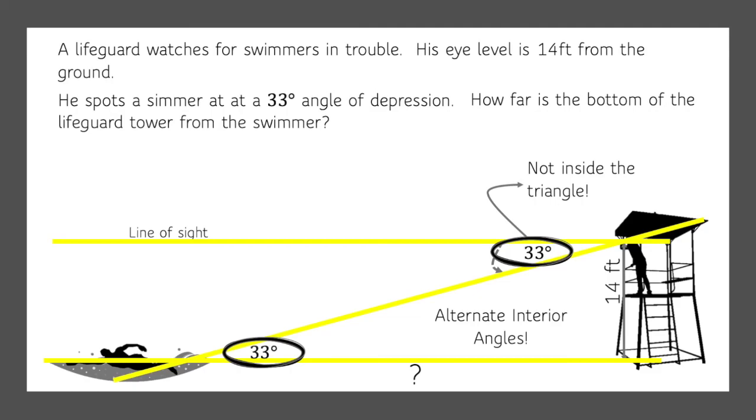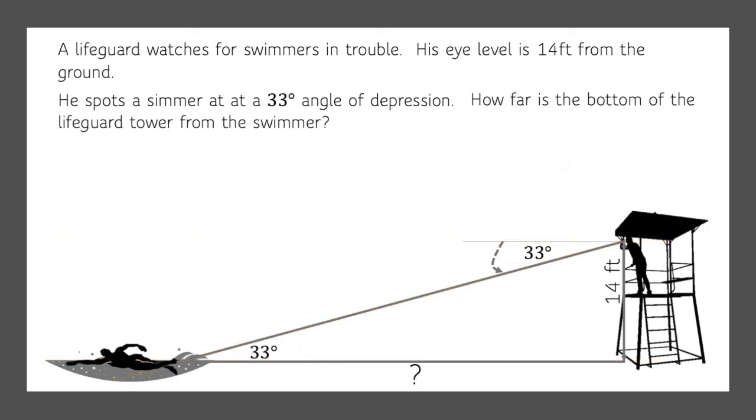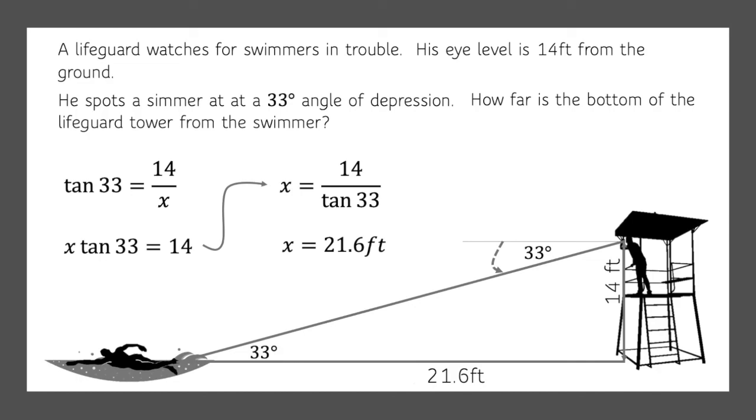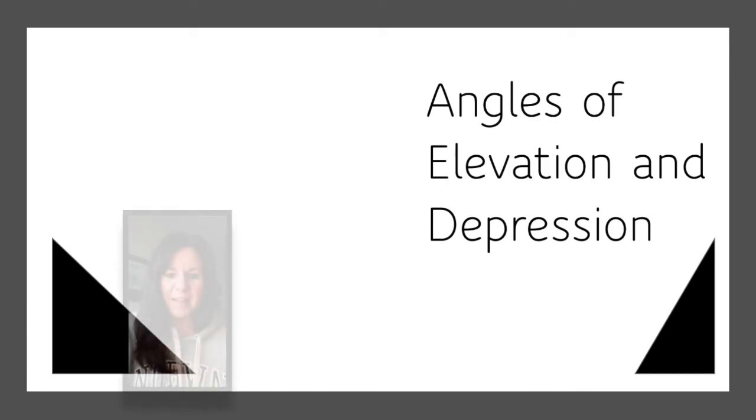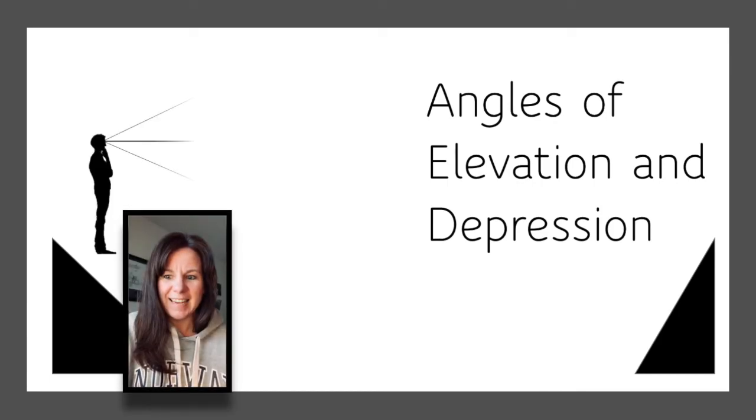Now we can use our trigonometry. Tangent of 33 degrees equals 14 divided by x. Multiply both sides by x, divide both sides by the tangent of 33. So in your calculator you do 14 divided by the tangent of 33, and x equals 21.6 feet. So that's angles of elevation and depression.